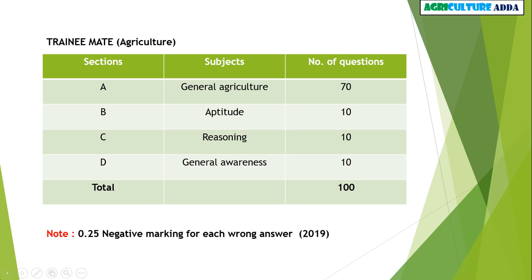Let's move on to the questions. This is about Trainee Mate Agriculture. There will be four sections: general agriculture, aptitude, reasoning, and general awareness. General agriculture will have 70 questions, aptitude 10, reasoning 10, and general awareness 10, making a total of 100 questions. In the upcoming 2019 exam, there will be 0.25 negative marking for each wrong answer. Please note there was no negative marking in 2018, but there will be in 2019.